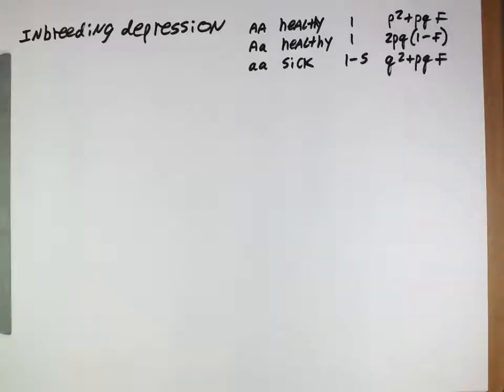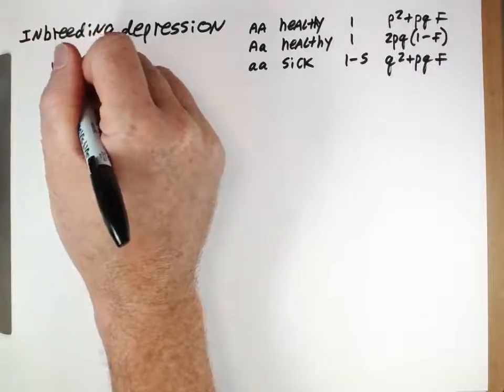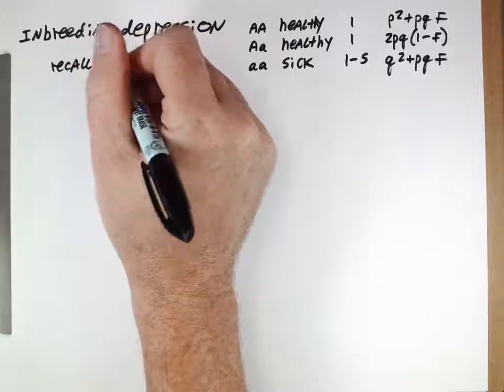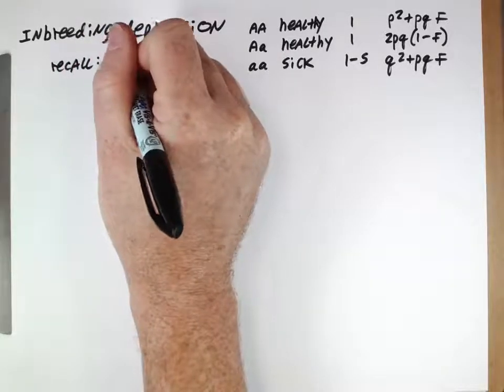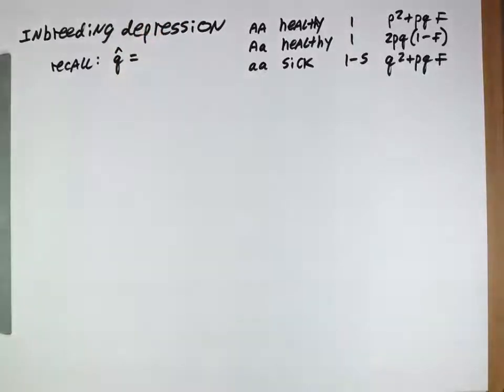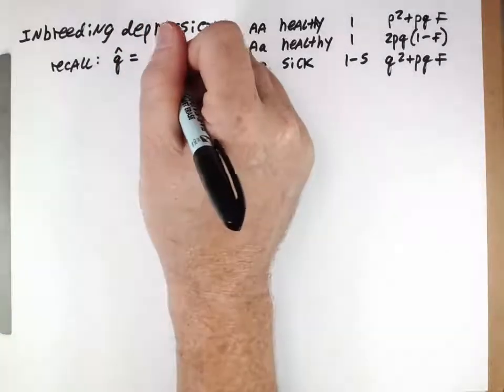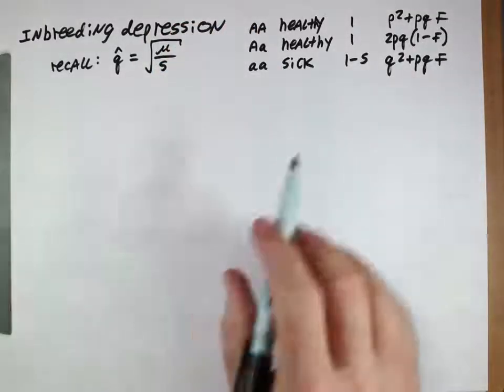Recall from earlier we did a derivation that for a recessive deleterious allele, the equilibrium frequency is the mutation rate divided by s, where s represents how bad that allele is, that fraction, and then the square root.